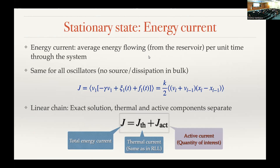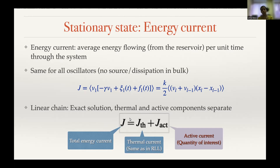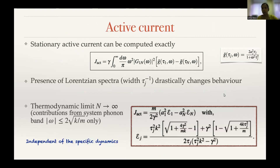I'll just give the results. This driving leads to a stationary state with an energy current flowing through the system. Since there is no source of dissipation in the bulk, there is a constant average current throughout the system. Because of the linear nature of the system one can solve it exactly and find the average current for all kinds of driving. It turns out the current naturally splits into two parts: a thermal part, exactly the same as the RLL result proportional to T1 minus TN, and an active part.